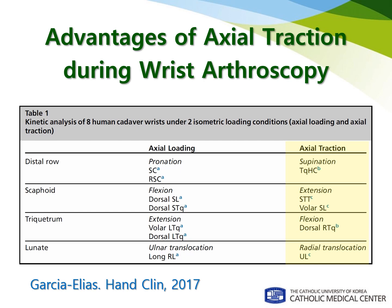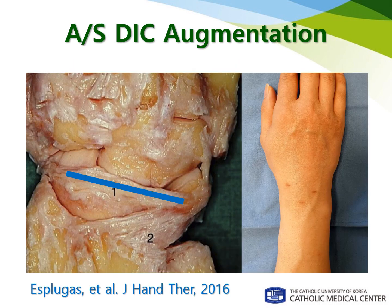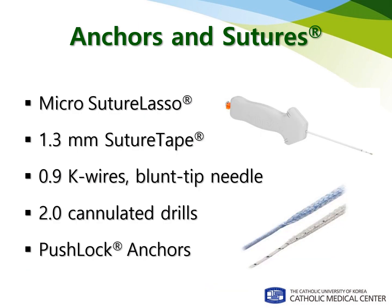According to Marc Garcia-Elias, when the scaphoid is extended and supinated, the lunate can be radially translocated by axial traction. Once the carpal bones are reduced with axial traction, I decided to place a non-absorbable suture alongside the dorsal intercarpal ligament via the STT and MCU portal and fix the suture to the scaphoid and triquetrum with two anchors. For this procedure, I chose 1.3 mm suture tape, passed with a microsuture lasso from Arthrex. To make a drill hole, I used a blunt-tip needle as a guide and 2.0 mm cannulated drills. For suture fixation, I used two push-lock anchors, 2.5 mm in size.